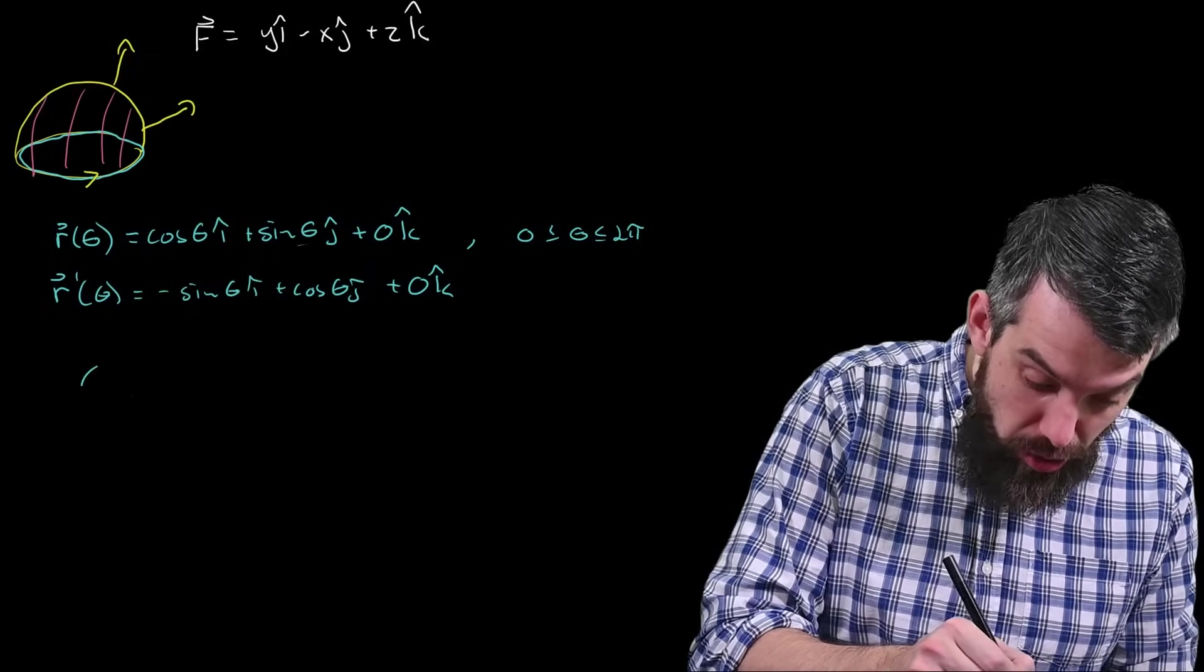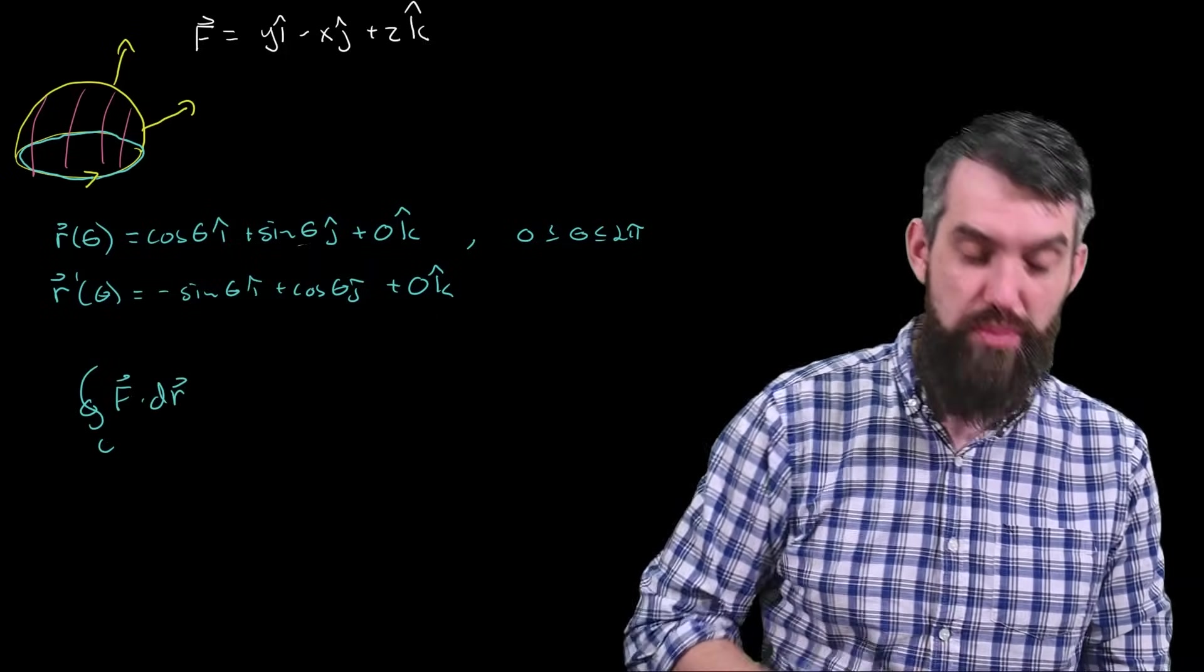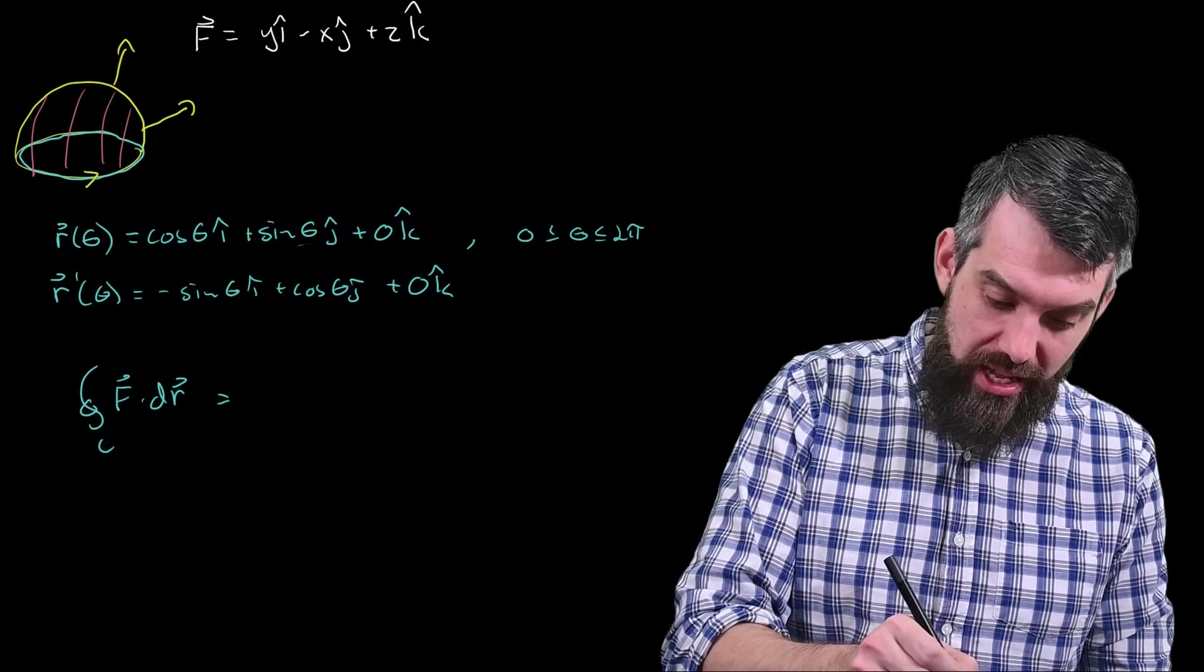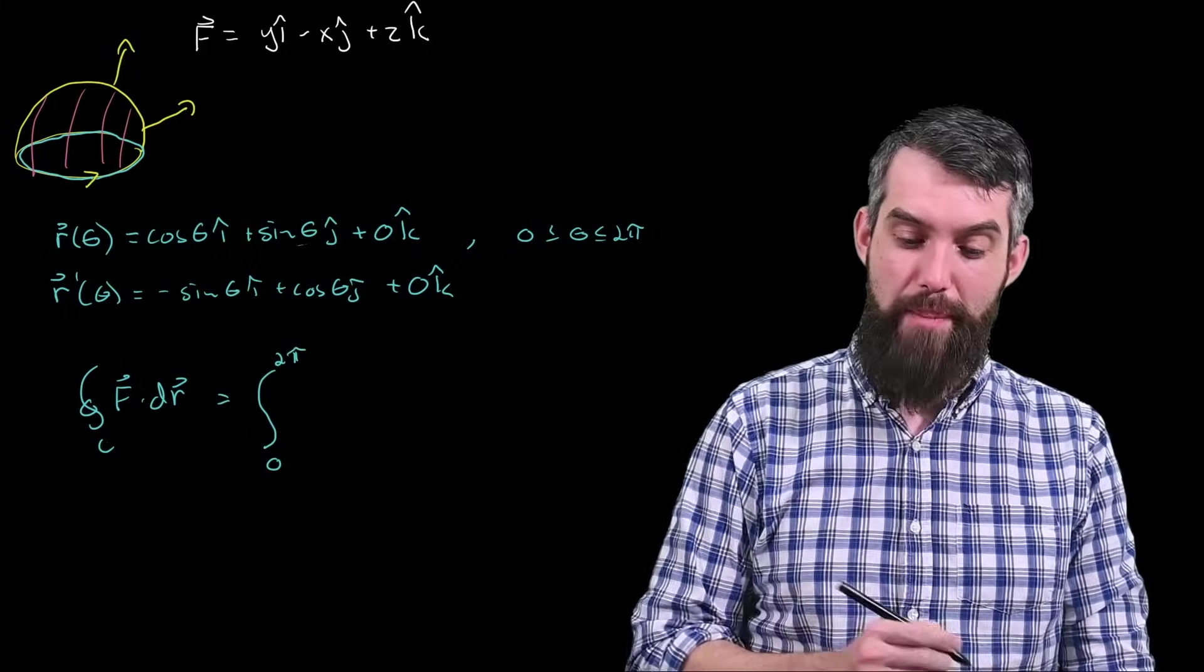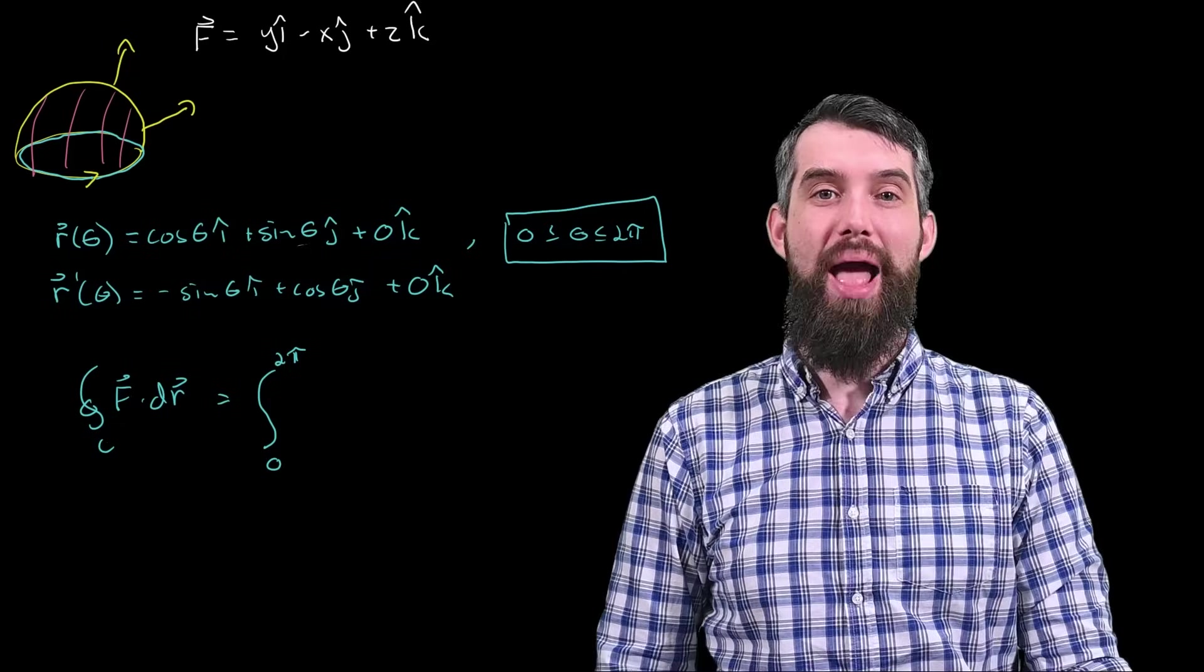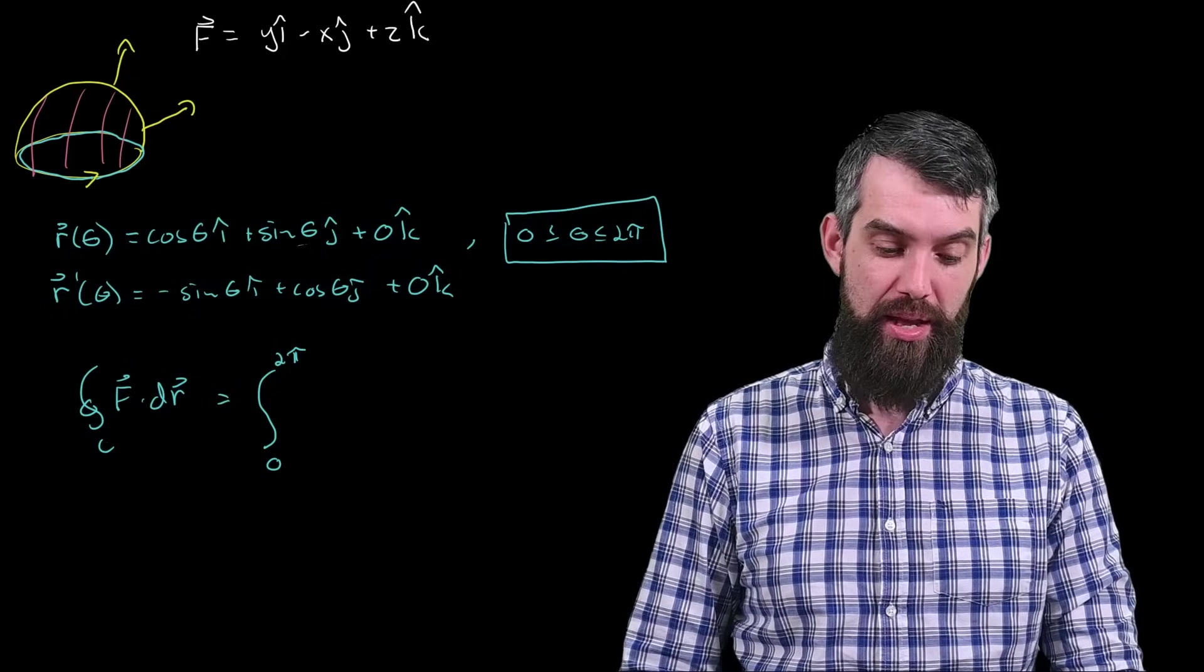So now I'm actually going to compute that line integral along the curve of f.dr having established my r and my r-prime. And what this is, is the integral from 0 up to 2pi. I, by the way, added in that the theta values were between 0 and 2pi. You should always tell the endpoints of your parameterization as well.